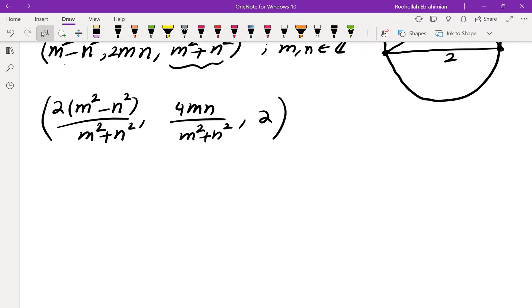And if we divide the numerator and denominator by n squared we get 2t squared minus 1 divided by t squared plus 1, 2t divided by t squared plus 1 and 2.